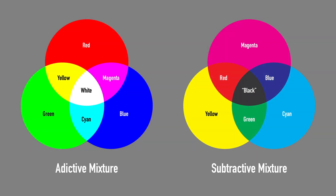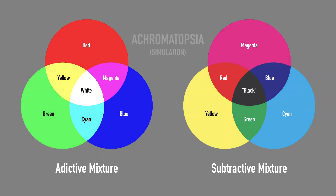Achromatopsia — very rare. It is a pathological state of vision in which the individual cannot distinguish colors, due to the scarcity of cones in the retina, being sensitive only to the presence of light. Note that in the additive color mixture, the secondary colors are difficult to distinguish from each other; in subtractive mixing, cyan, green, red, and magenta are also very difficult to detect.